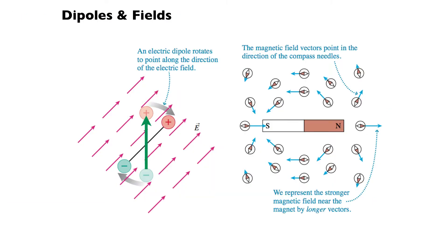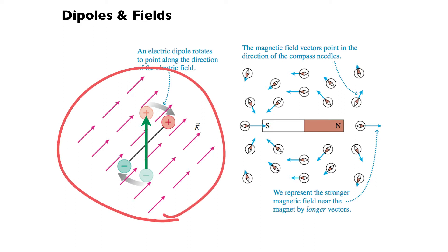Remember back when we were talking about electric dipoles - the dipole moment vector rotates to line up with an electric field. A magnetic dipole is the smallest unit of magnetism; you can think of a compass as a magnetic dipole. Magnetic dipoles will rotate to line themselves up with a magnetic field, and that's why we'll be able to use compasses to determine the magnetic field from bar magnets and other configurations.